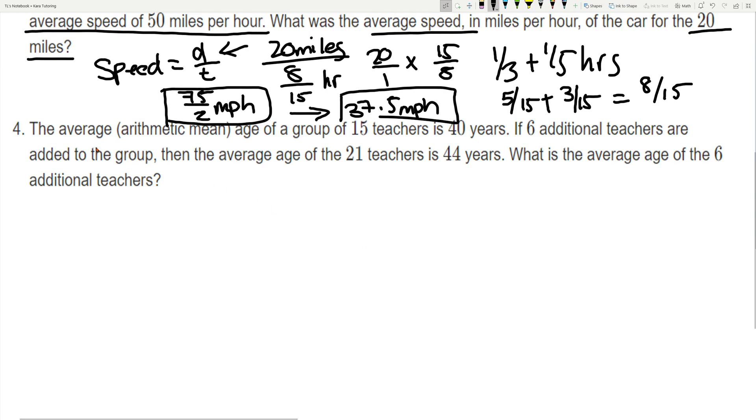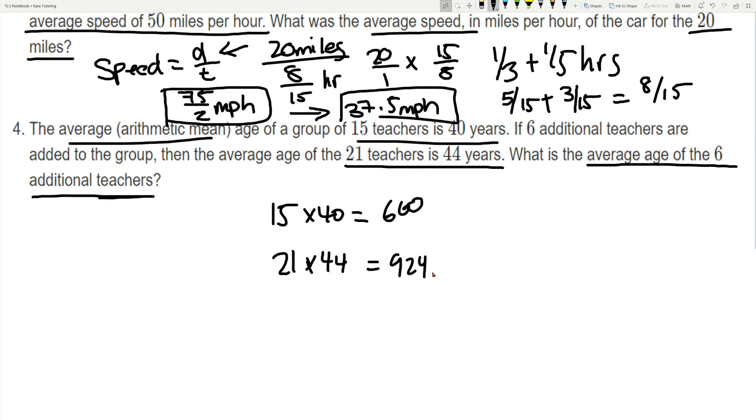So lastly the fourth question deals with mean. We have two sets of data, so 15 teachers at 40 years and 21 teachers at 44 years, and what we're looking for is the average age of the six additional teachers. So 15 and average is 40 so let's multiply that. 15 teachers times 40 years. 21 teachers times 44 years. So that's just going to be 600 and that's going to be 924. So if we subtract those two and we find the difference then we could find how much these six teachers, their age combined, contributed to the difference.